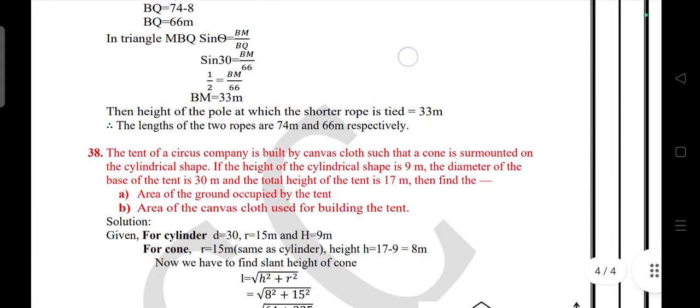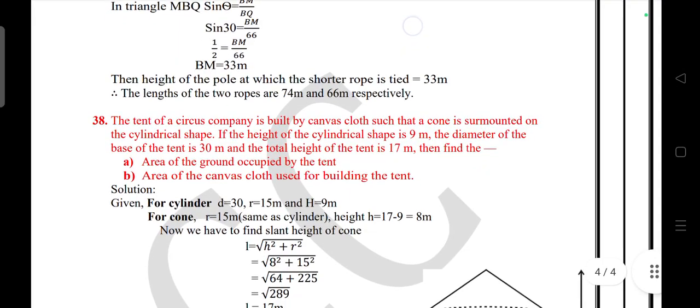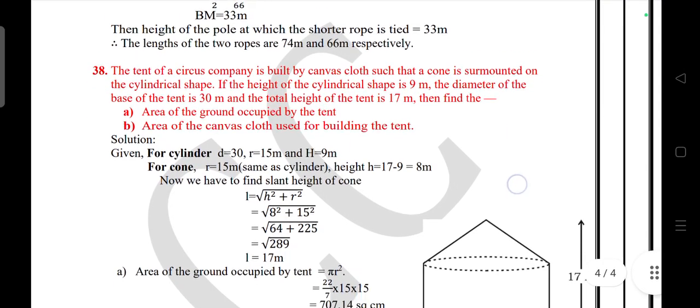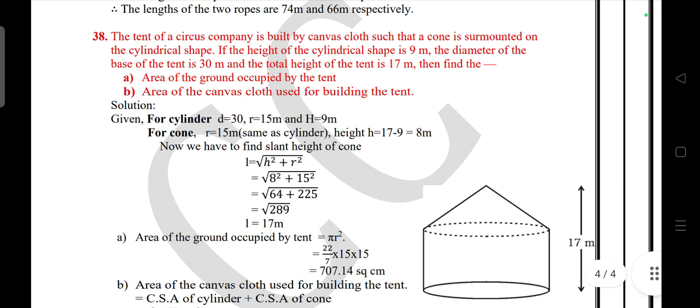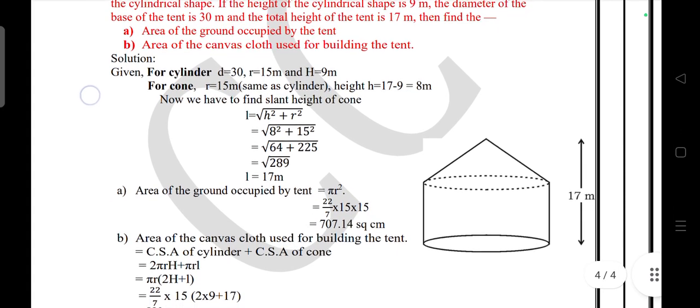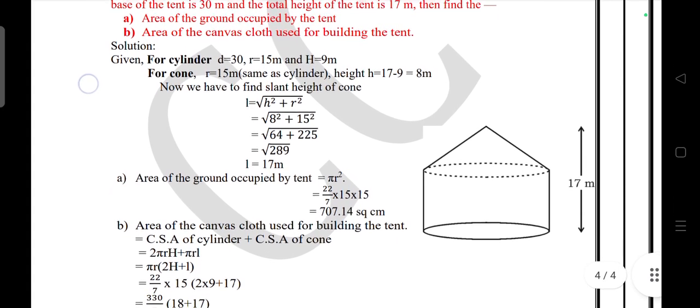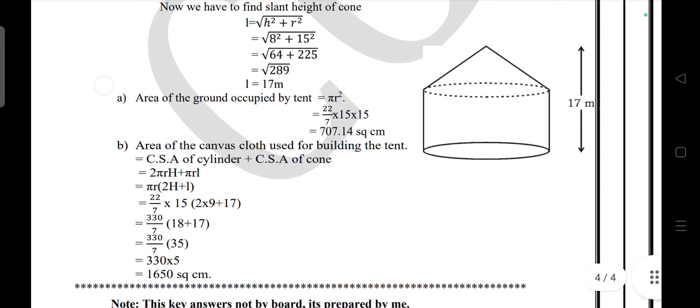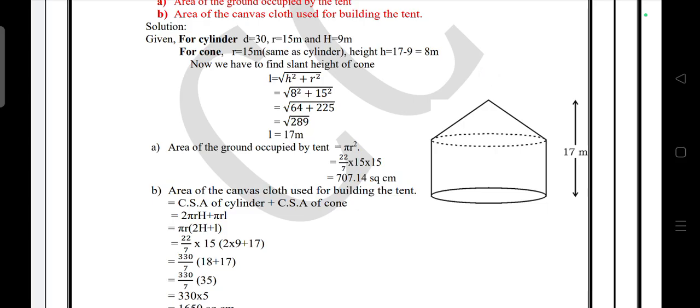Question 38: A tent is built by canvas cloth such that a cone is surmounted on a cylindrical shape. If the height of the cylinder shape is 9 meter, the diameter of the base of the tent is 30 meter, the total height of the tent is 21 meter, find the area of ground occupied by the tent and area of canvas cloth used in the building of the tent. This is it. Stay tuned for more such updates. Thanks for watching, bye bye.